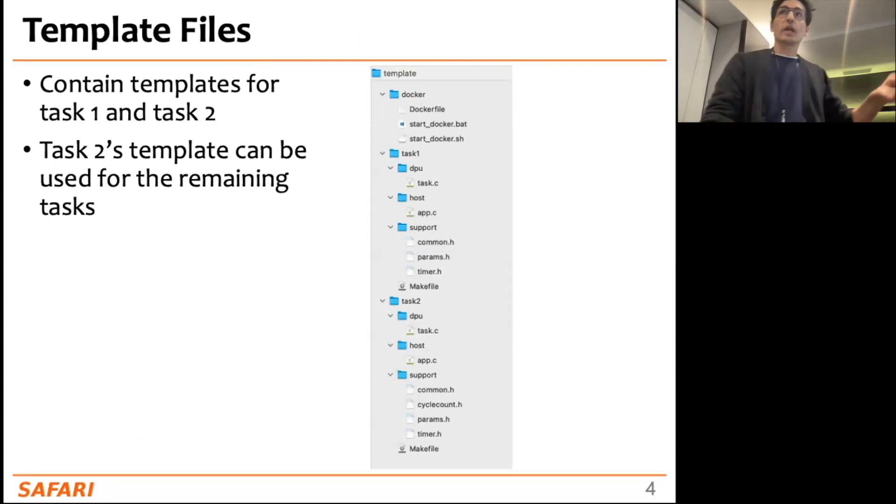As I said in the handout, there is also a link to the template files. You will download that zip file and it contains two templates - task 1 and task 2 - for the first two tasks of the lab. For the remaining tasks, you can use task 2 template as well. Observe that the zip file also contains a folder called Docker, because that's a Docker container with the UPMEM SDK.